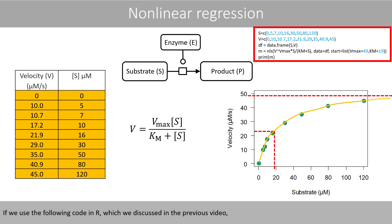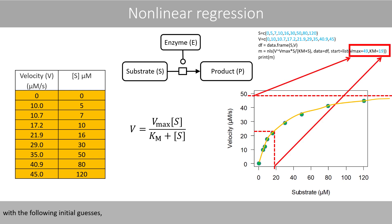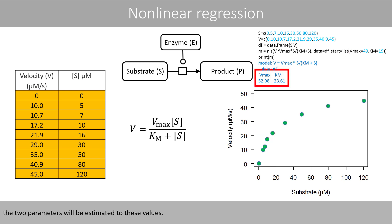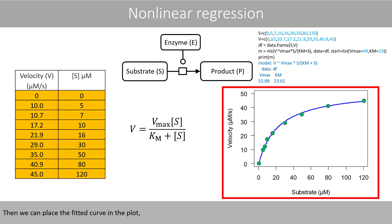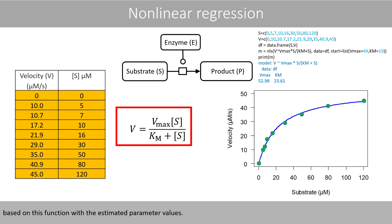If we use the following code in R, which we discussed in the previous video, with the following initial guesses, the two parameters will be estimated to these values. Then we can place the fitted curve in the plot, based on this function with the estimated parameter values.